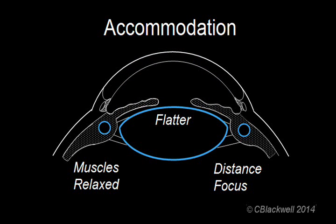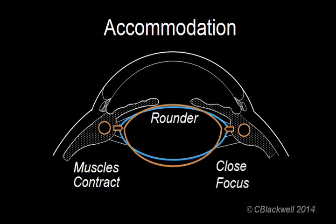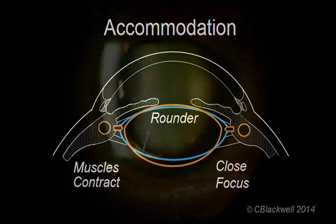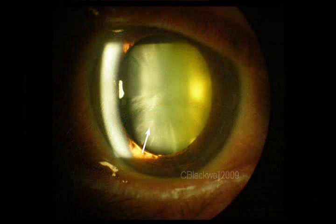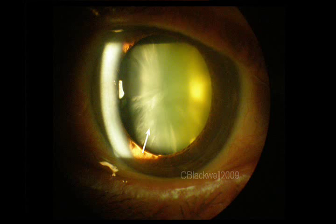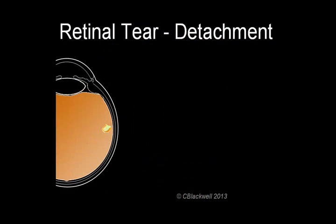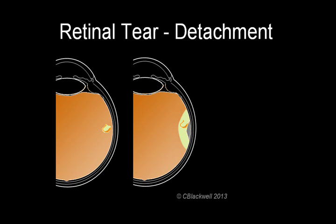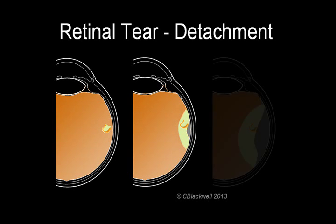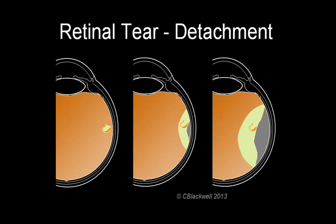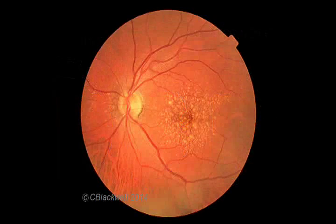Speaking of reading glasses, in video 3 we will look at changes in the lens — loss of flexibility, which leads to the need for reading glasses, and clouding of the lens, called cataract. In video 4 we will look at changes in the vitreous and retina — vitreous changes leading to retinal tear and detachment, and retinal changes preceding macular degeneration.